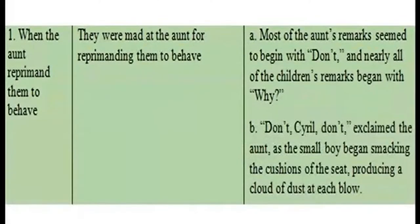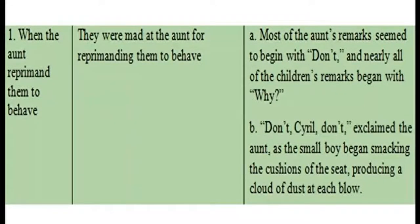This is part of our prediction table. For this exposition event — when the aunt reprimands them to behave — our prediction was that the children were mad at the aunt for reprimanding them. The text evidence is: 'Most of the aunt's remarks seem to begin with don't and nearly all the children's remarks begin with why,' and 'Don't!' exclaimed the aunt as the small boy began smacking the cushions of the seat, producing a cloud of dust at each blow.